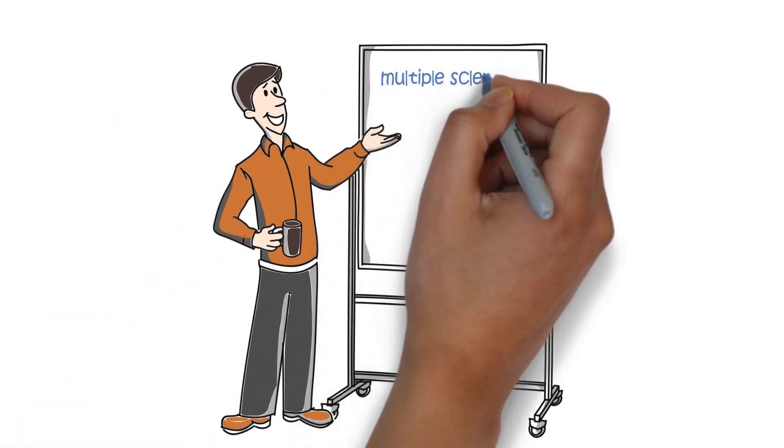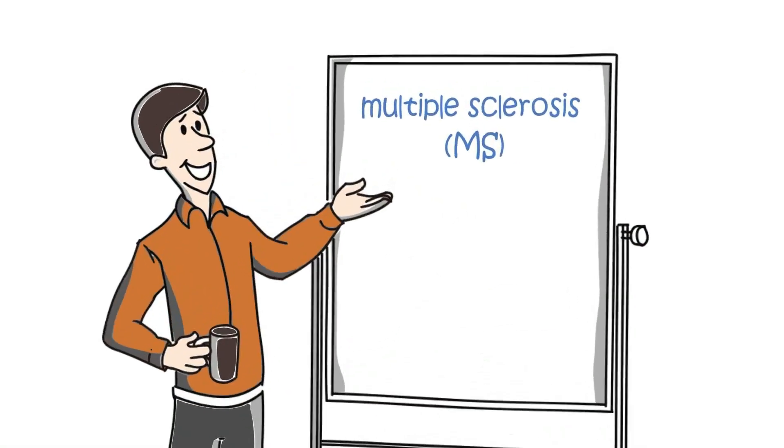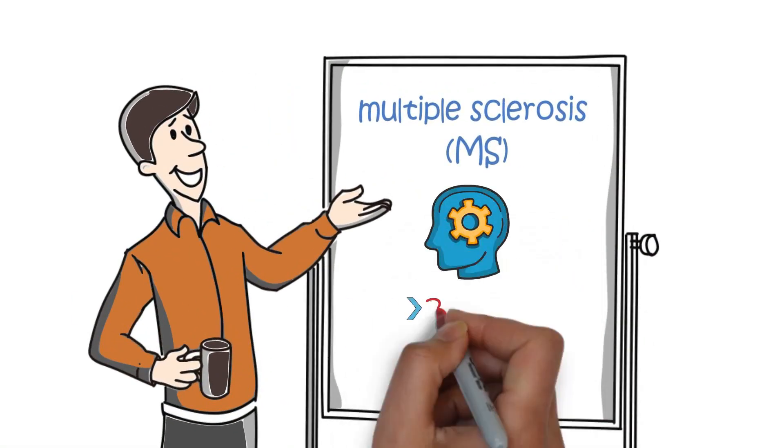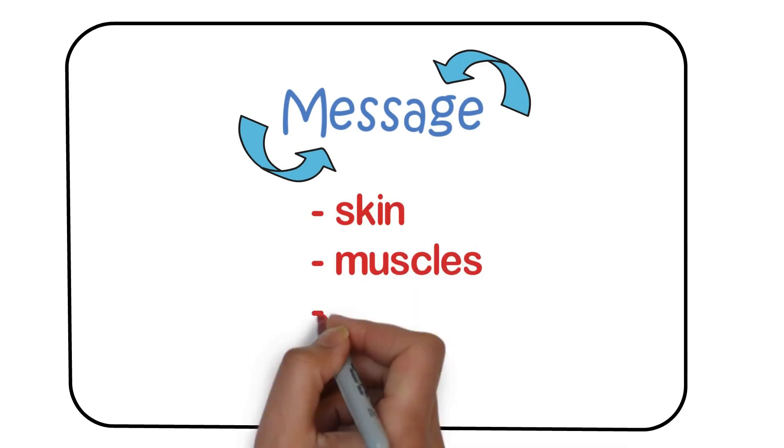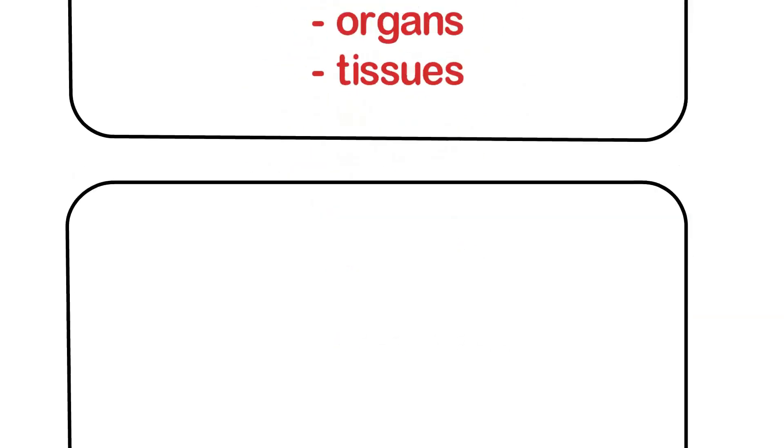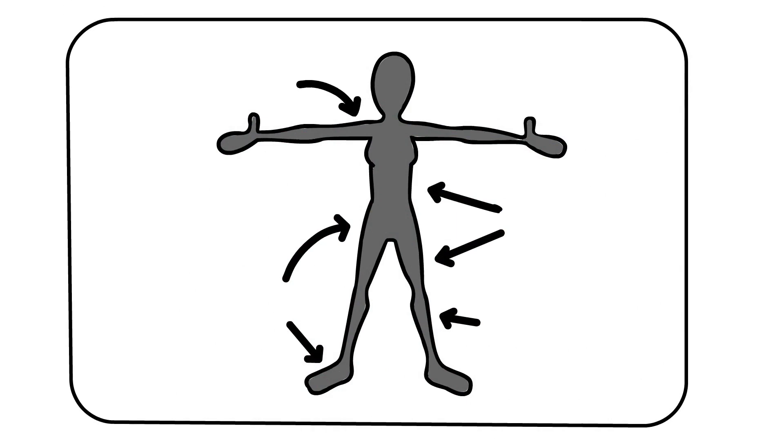Before we talk about multiple sclerosis, or MS, it is important to have a basic understanding of the brain, spinal cord and nerves. Nerves come out of your brain and spinal cord and take messages back and forth from your skin, muscles, organs, and tissues. Nerves are vital for our body to function properly.